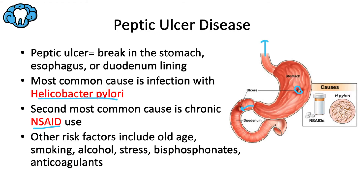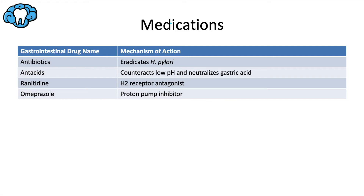What medications help combat GERD and peptic ulcer disease? Antibiotics like amoxicillin or metronidazole can be prescribed to eliminate H. pylori if that's the etiology of the peptic ulcers. Antacids can provide quick relief for GERD or peptic ulcers, but they aren't generally recommended nowadays, especially for peptic ulcers, because they won't actually fix the problem — just the symptoms, and only temporarily.